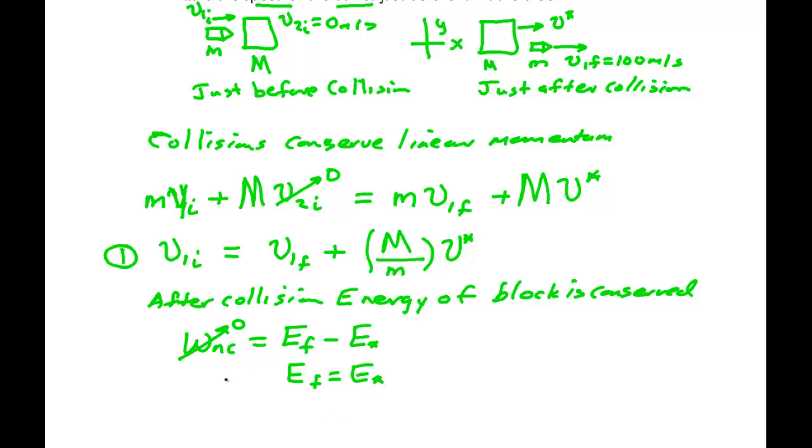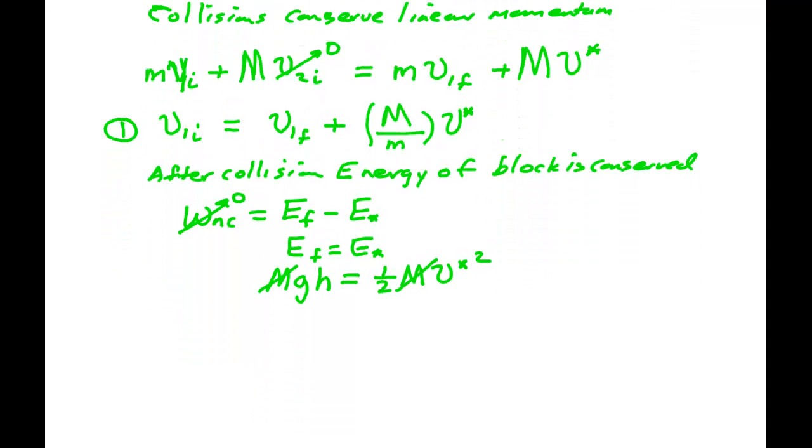What does it have at the end? The mass of the block times gravity times the height. It has no kinetic because it's come to a stop. What did it have when it started? One half the mass of the block times V star squared. I can cancel the mass of the block. I now have a way to find V star. V star is the square root of 2gh. I call this equation 2.